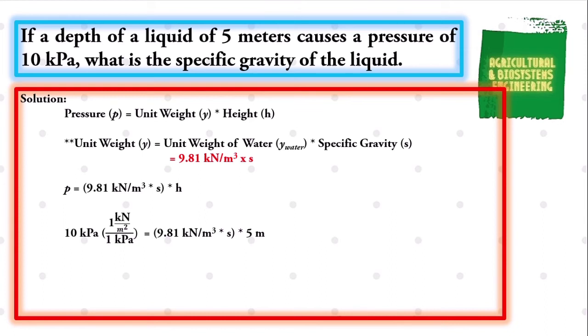We have to convert the unit of pressure from kilopascals to kilonewtons per square meter. We know that 1 kilopascal is equal to 1 kilonewton per square meter. After conversion, we divide both sides by 5 meters. We cancel out 5 meters on the right side.